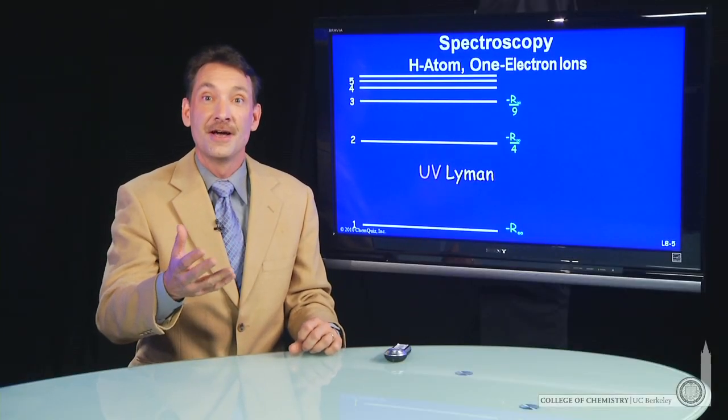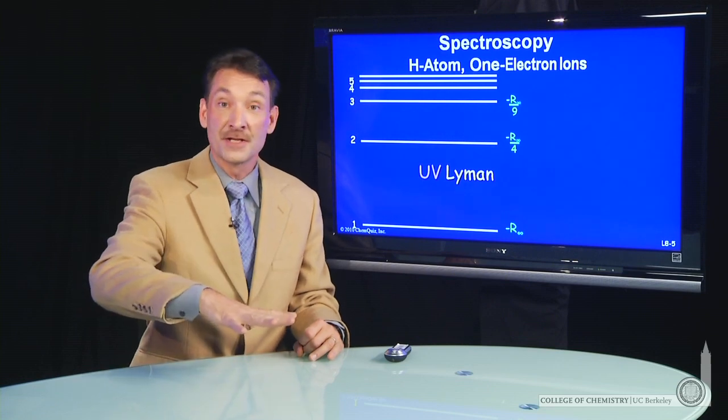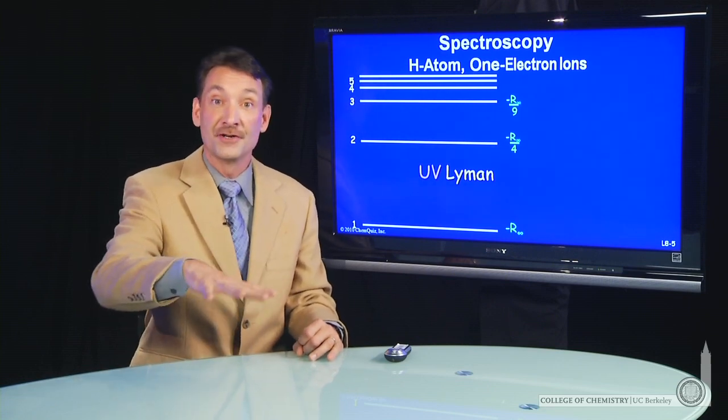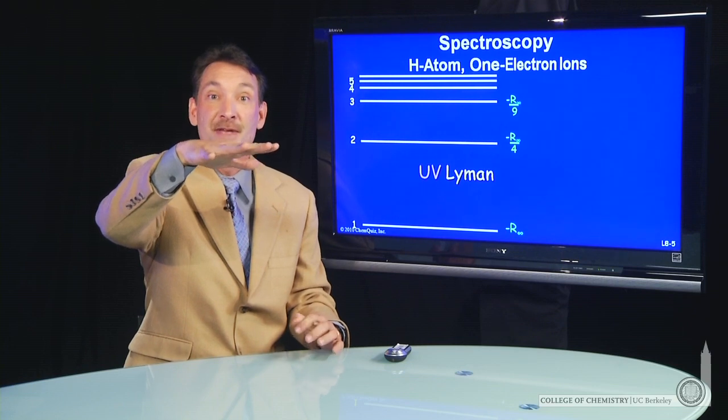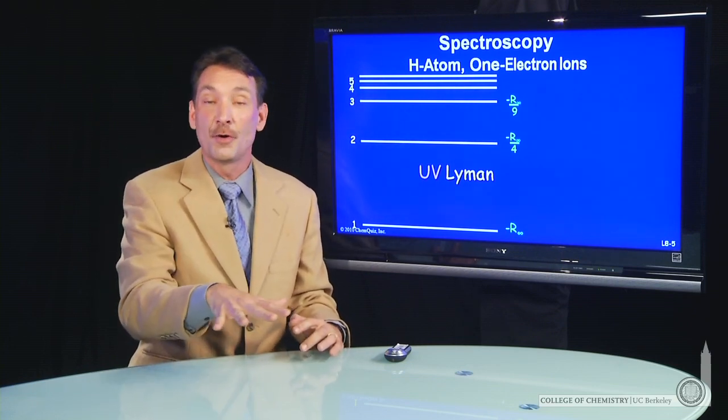When an electronic transition occurs, a photon is either absorbed or emitted. So if a photon is absorbed, an electron goes from a low energy state to a high energy state. When a photon is emitted, that's an electron in an excited state dropping down to a lower energy state.